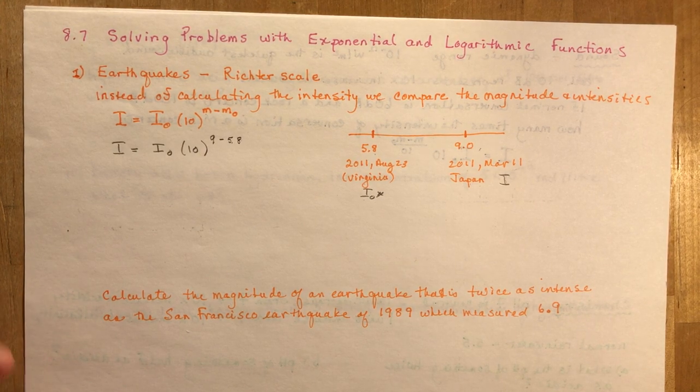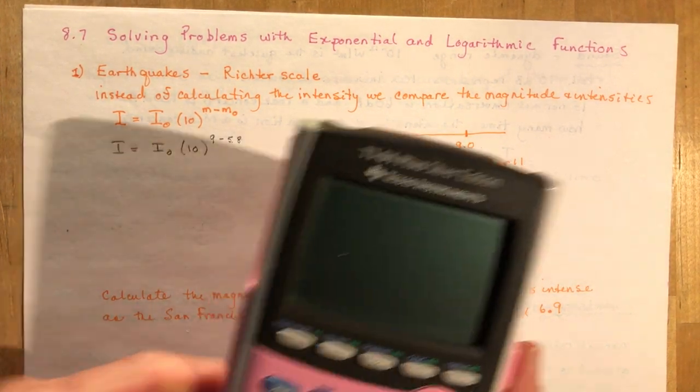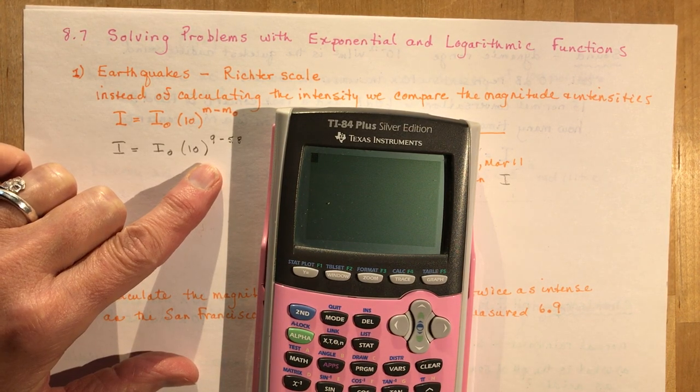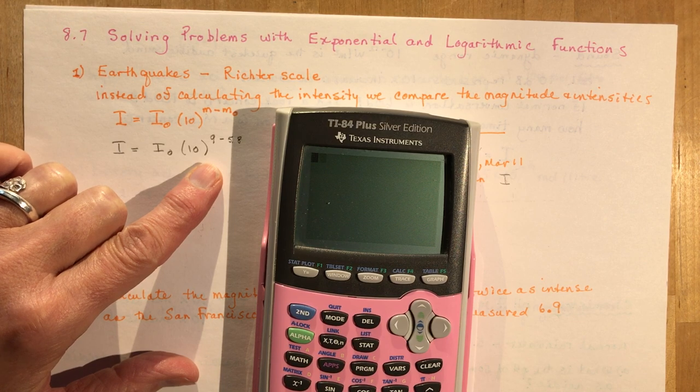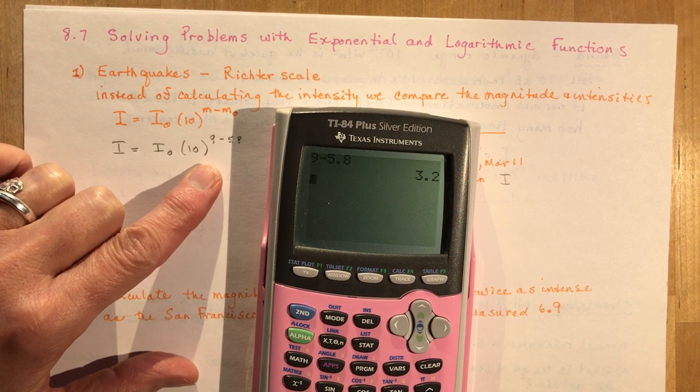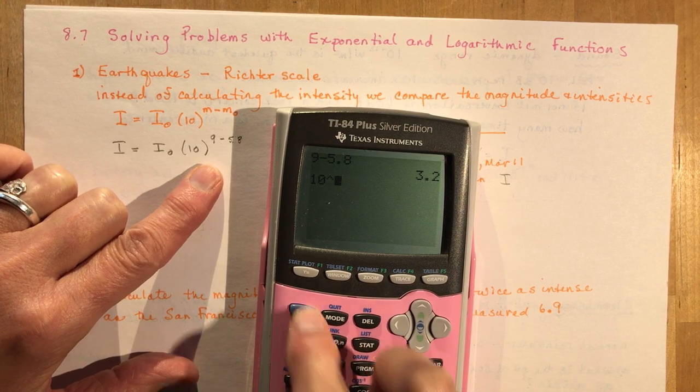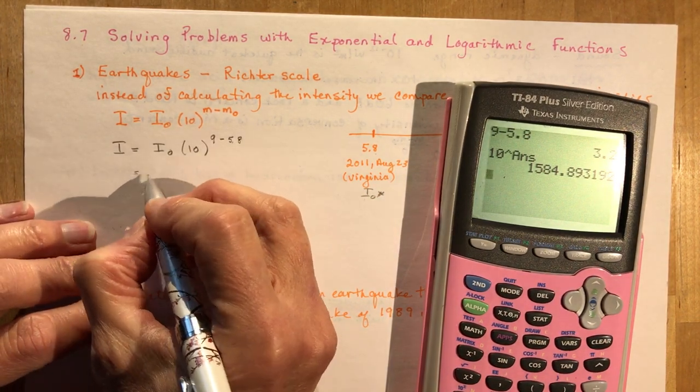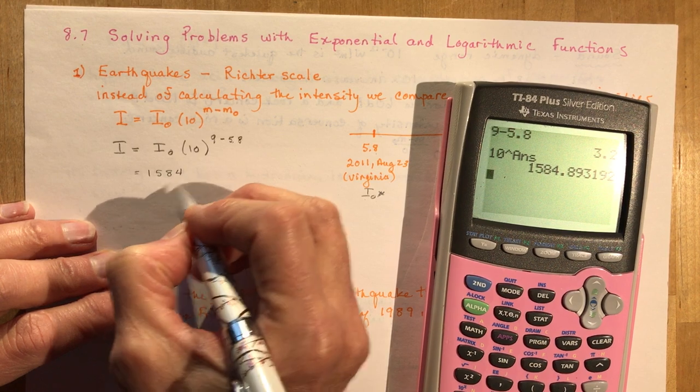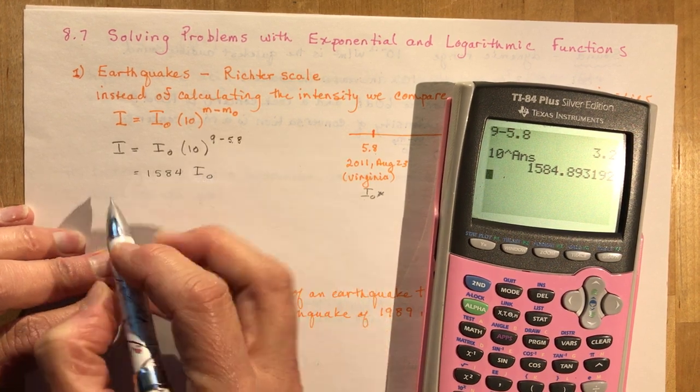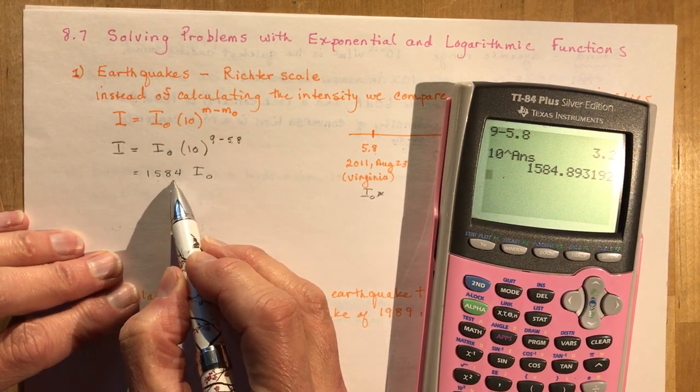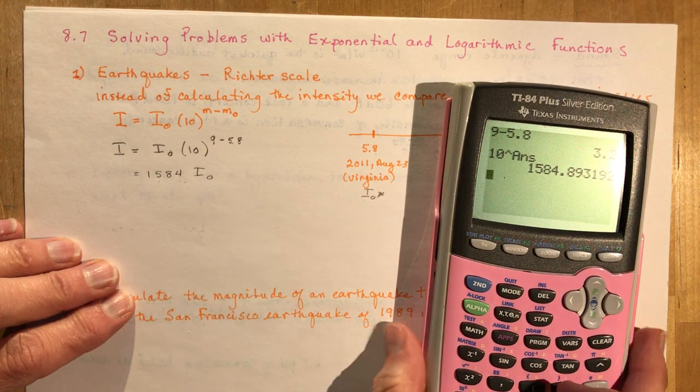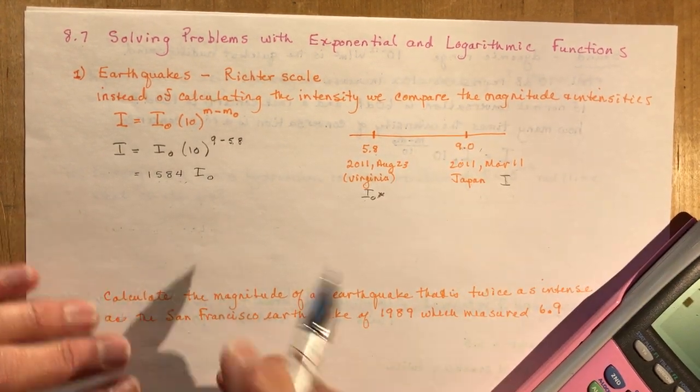So you need to get out your calculator and we're going to take a look at 9 minus 5.8. So 10 to the power of my answer is going to give me 1,584. So that means that the earthquake in Japan was 1,584 times stronger than the earthquake in Virginia. That's big. 1,584 times stronger. Wow.